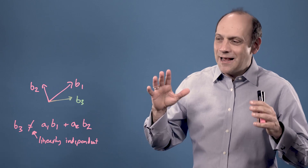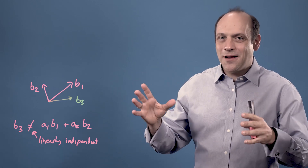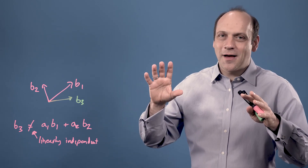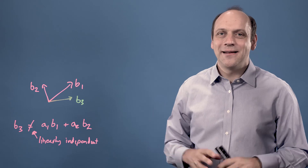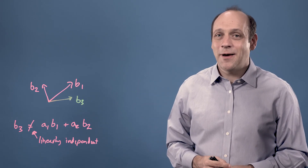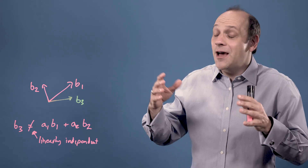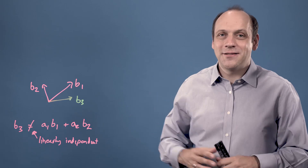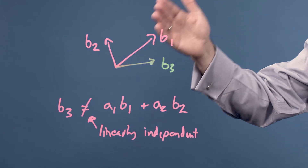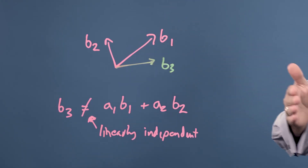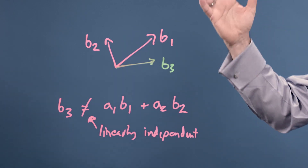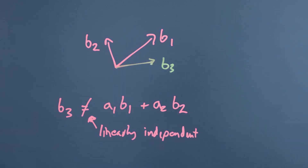So that lets us define what we mean by the number of linearly independent basis vectors in our space. If I had a fourth basis vector B4 that wasn't a linear combination of B1, B2, and B3, I'd have a four-dimensional space, and so on, up to as many dimensions as I like.